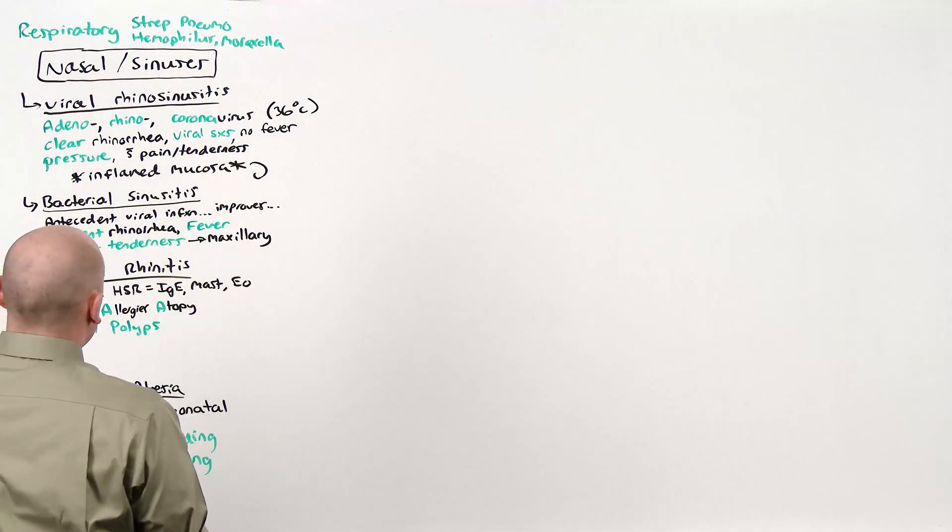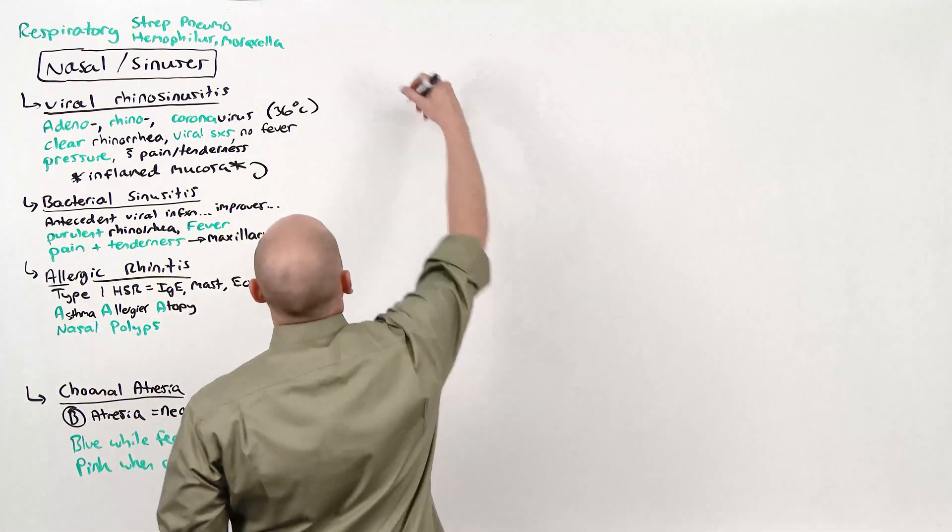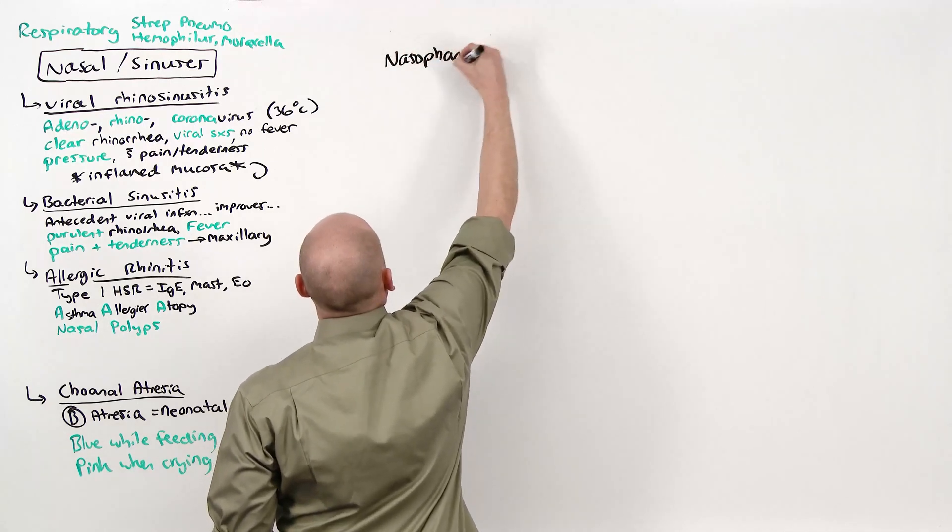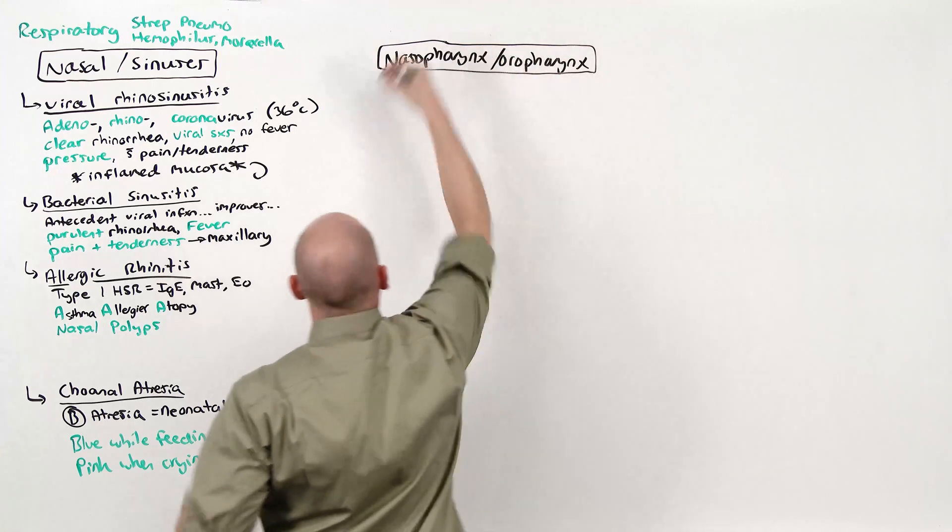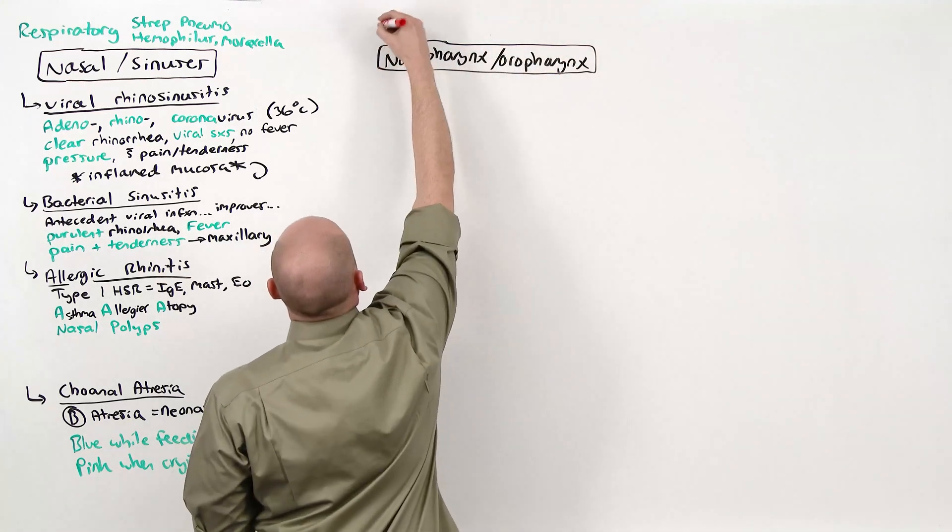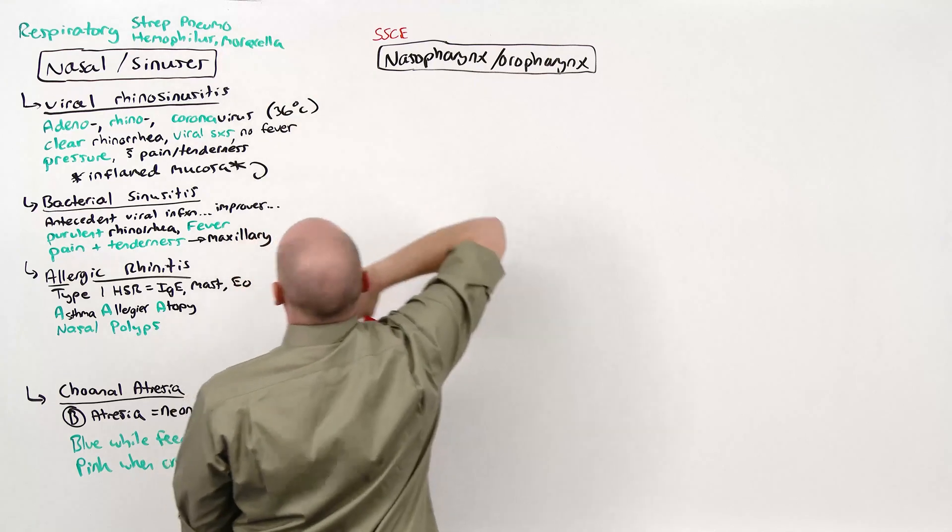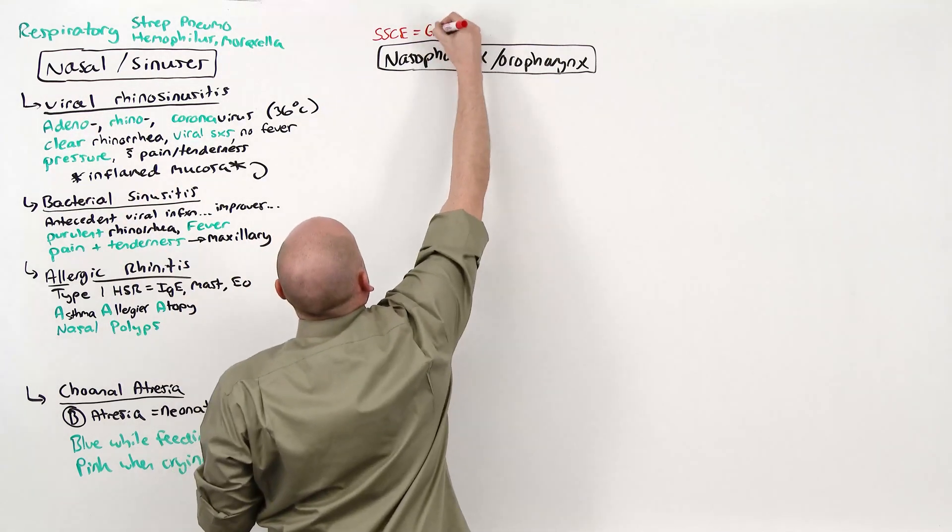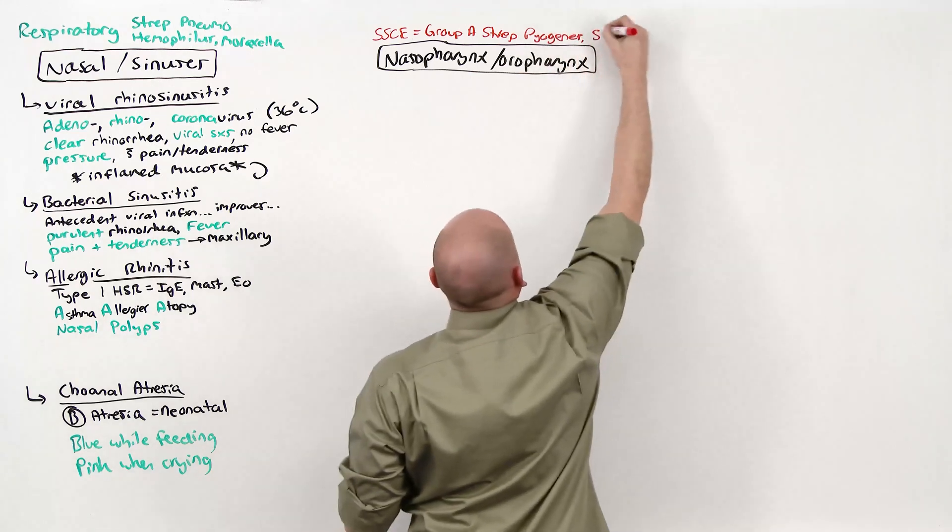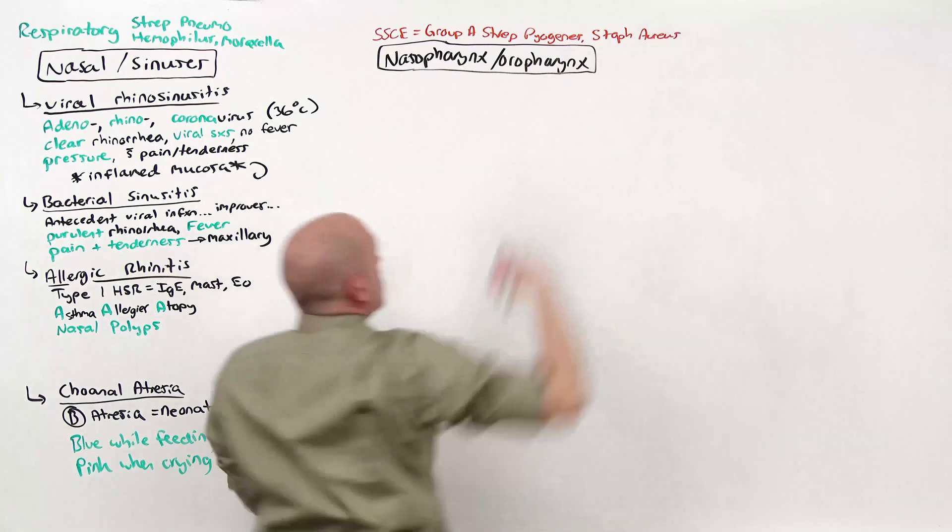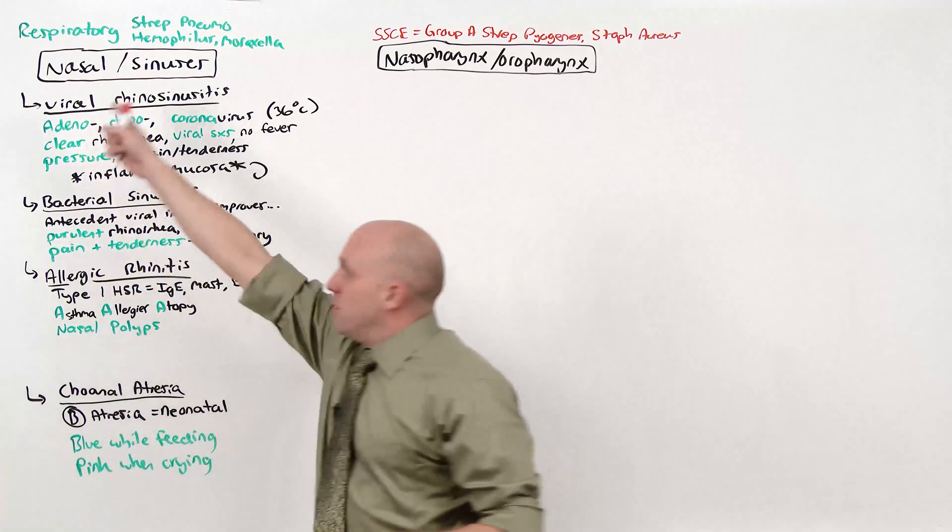This is the nasal and sinuses. We're going to move over and move down deeper into the airway, nasopharynx or oropharynx. The nasopharynx and oropharynx are the non-keratinized stratified squamous cell epithelium, and not strep pneumo, haemophilus, moraxella. That's the respiratory epithelium. This gets infected by group A strep pyogenes and staphylococcus aureus. Now you have to be careful because it's not strep and strep, right? Oropharynx, nasopharynx: group A strep pyogenes. Respiratory epithelium: strep pneumo.